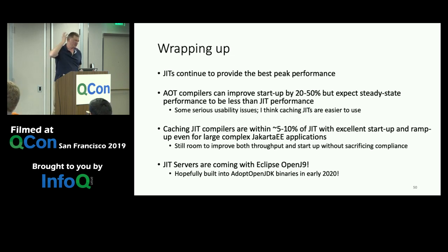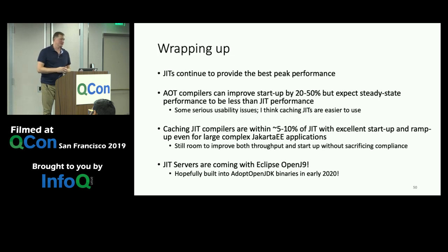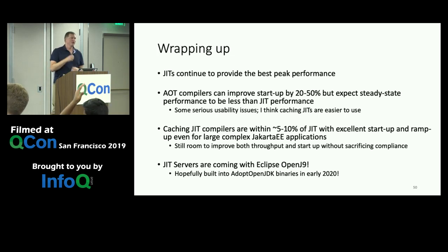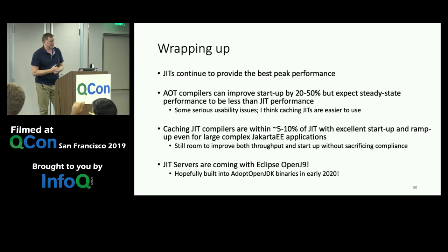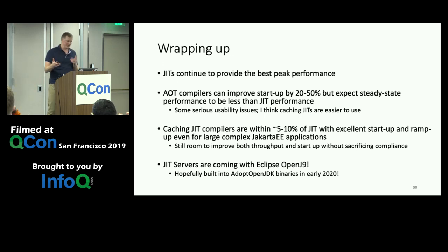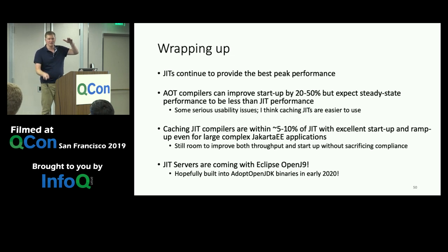To wrap up: JITs continue to provide the best peak performance, with exciting opportunities ahead. AOT compilers are interesting technology that can improve startup performance dramatically, but there are steady-state performance issues and serious usability issues when used alone. In OpenJ9, we combine AOT with JIT, caching JIT compiles, and now JIT servers. With caching JIT, you can get within 5 to 10% of peak JIT performance with excellent startup and ramp-up even for large Jakarta EE applications. There's still room to improve throughput, startup, and footprint without sacrificing compliance or going to a closed-world model.